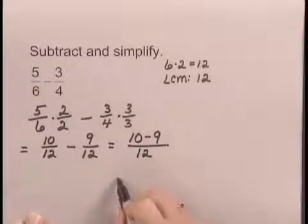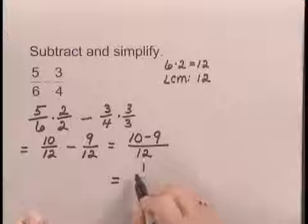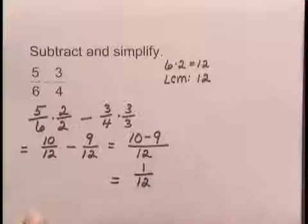And we perform the subtraction. 10 minus 9 is 1, and the denominator is 12. So 5 sixths minus 3 fourths is 1 twelfth.